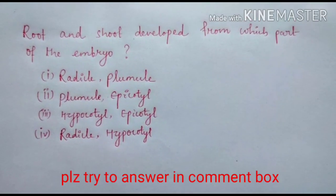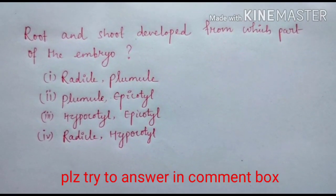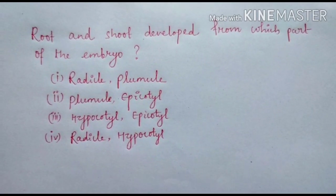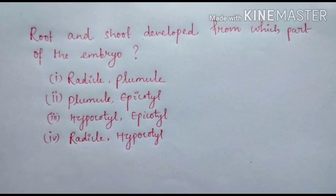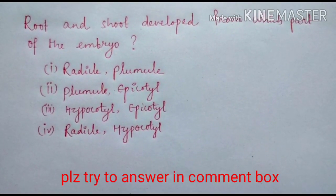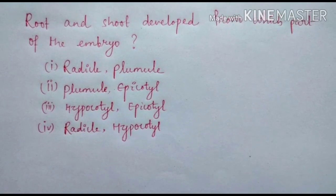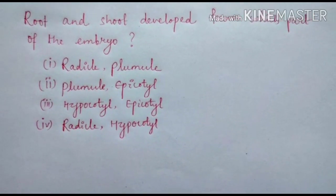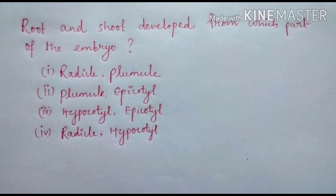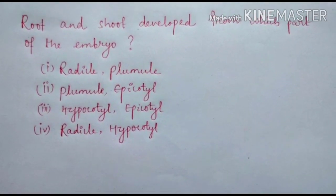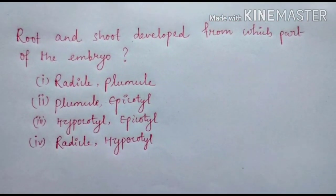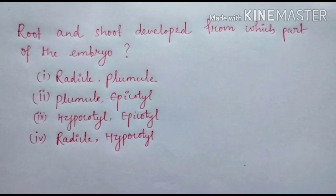Root and shoot are developed from which part of the embryo? The options are: radicle; plumule; plumule and epicotyl; hypocotyl; epicotyl; and lastly radicle and hypocotyl. Dear students, please give the correct answer after watching this video. If you are not able to give the answer, I will give the answer at the end of the video.